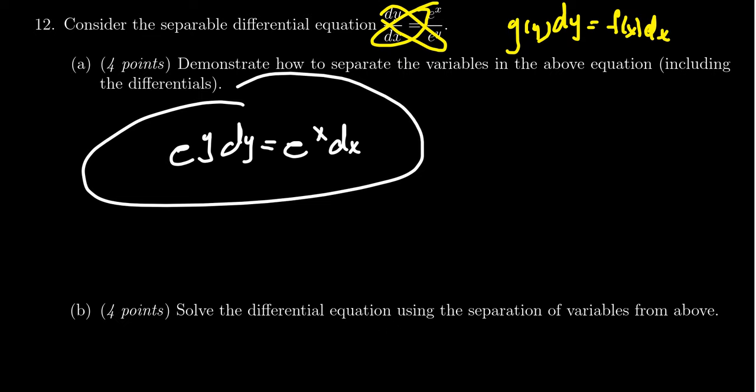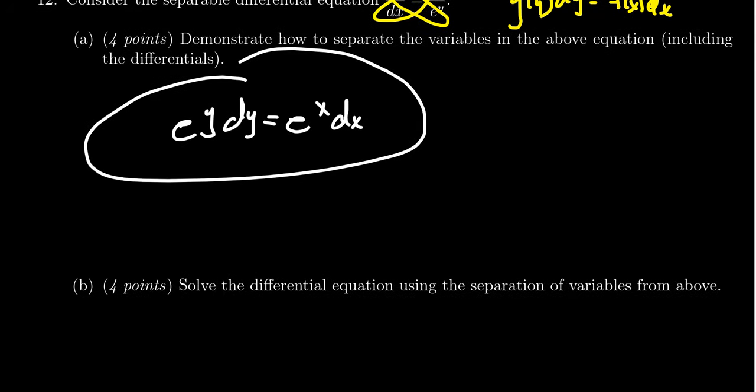Now, admittedly, if you saw an alternate version of this question on your final exam, the separation of variables process could be much more complicated than this. The point is to get all of the y's on the left side and all the x's on the right-hand side. And so then that gives us part a, and that's four points right there.